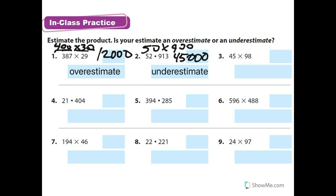Number 3, I'm going to round 45 up to 50, and round 98 to 100. So 5 times 1 is 5 with 1, 2, 3 zeros: 5,000. And this is an overestimate. So you do 4, 5, and 6 on your own, and we'll go over it.